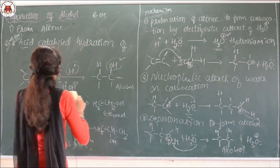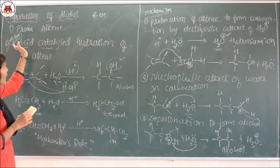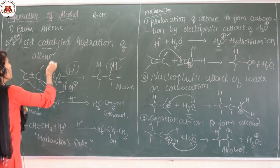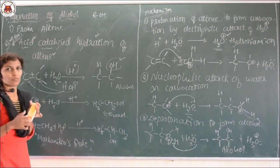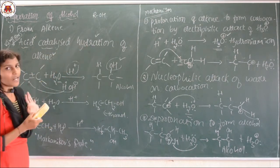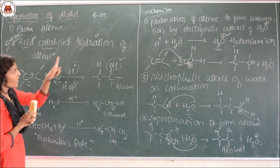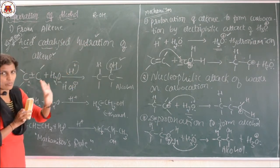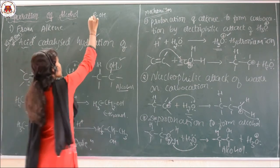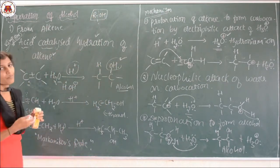We want to prepare the alcohol by using the alkene. The name of the method is acid catalyzed hydration of the alkene. For the alkene, we add acid along with water — that is why this is known as acid catalyzed hydration of the alkene. The alkene consists of carbon to carbon double bond. Adding water with H plus present leads to formation of the alcohol — OH attached to carbon. If OH is present, that is the class of alcohol.